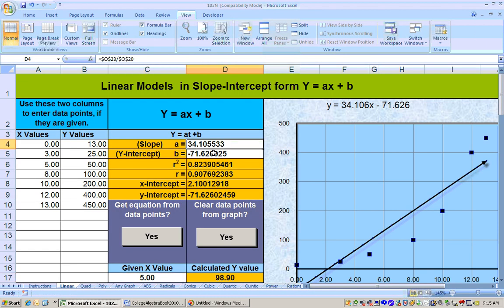The slope is 34.1. That means every year, the speed of the computer chip is increasing by 34.1 megahertz. The y-intercept is 0, negative 71, which means in the year 0, 1985, the speed was negative 71.62.